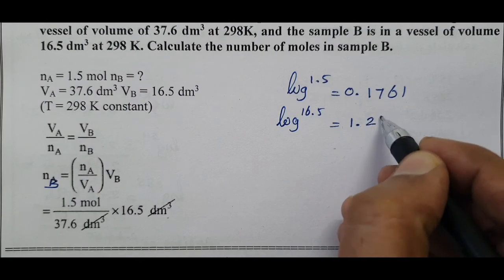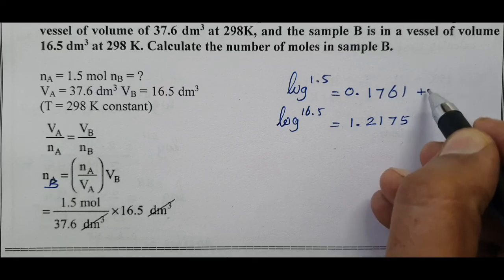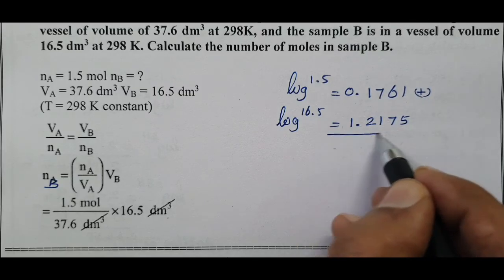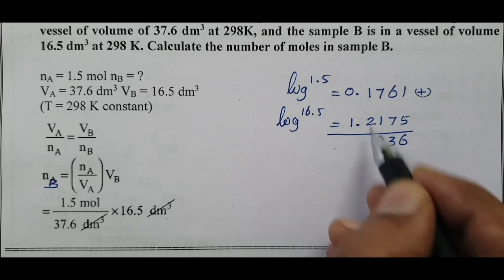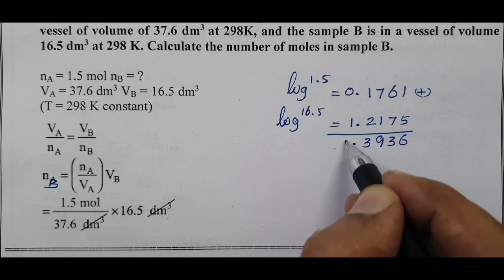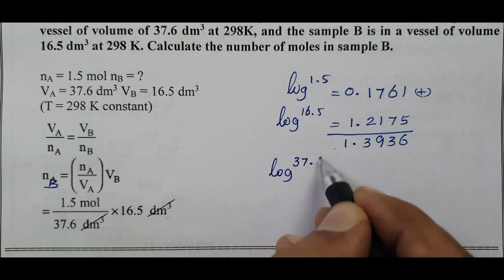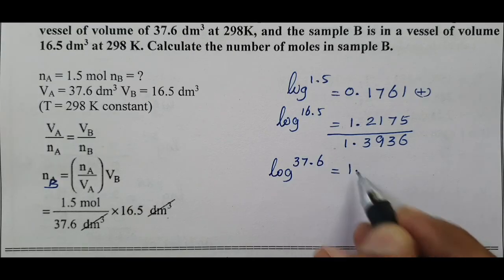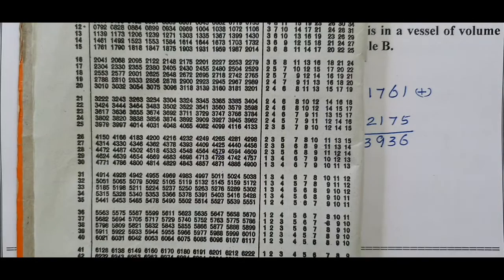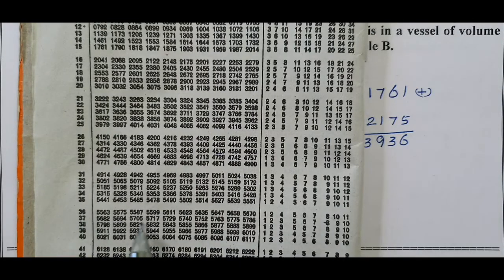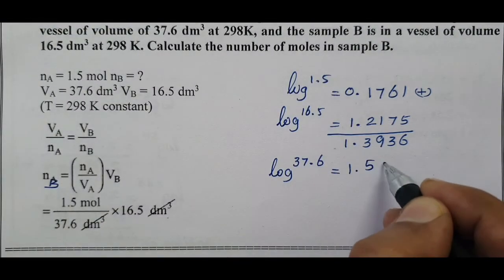So this is 1.2175. Log 37.6 is equal to 1.5752.